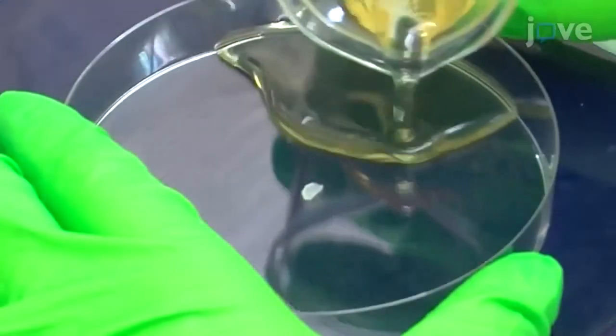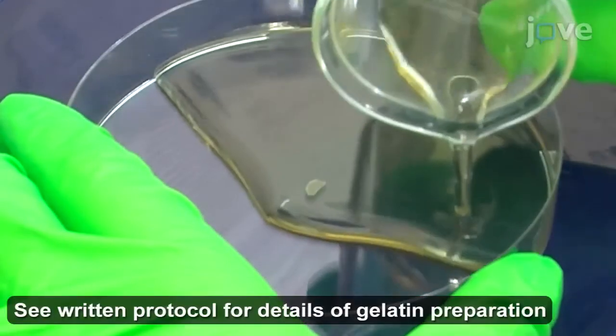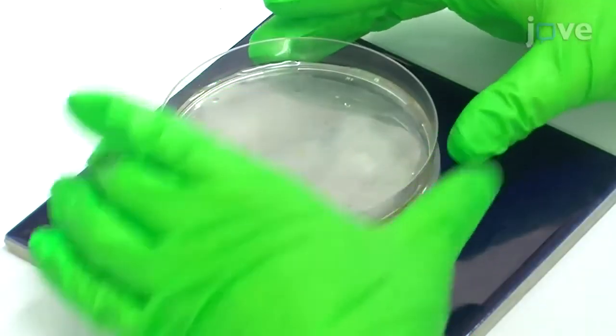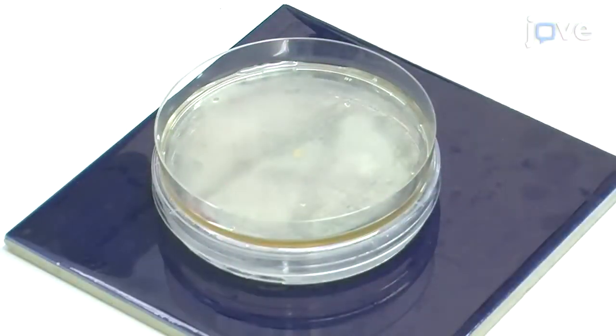Remove the excess buffer using a dry paintbrush. Cover the tissue with warm gelatin solution and place the petri dish onto a frozen block to quickly cool the solution.